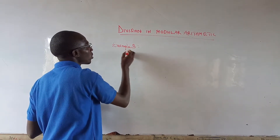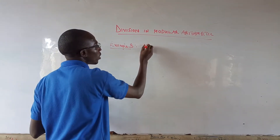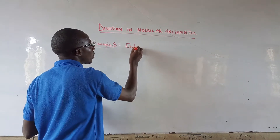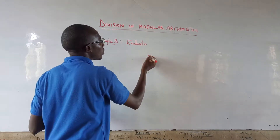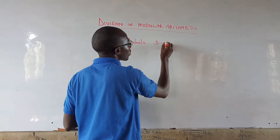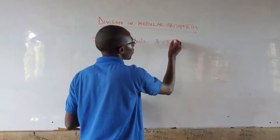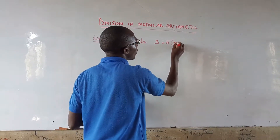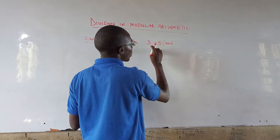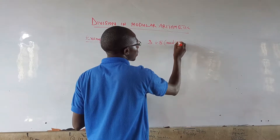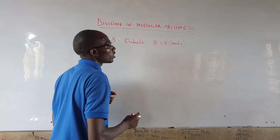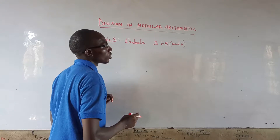Let's look at Example 3. Evaluate 3 divided by 5, mod 6.